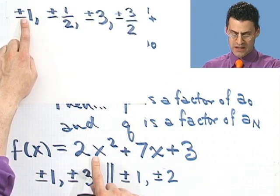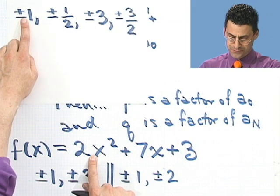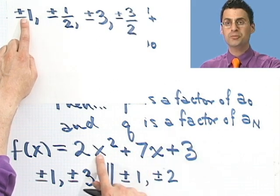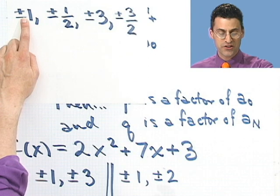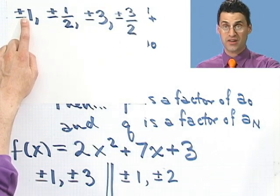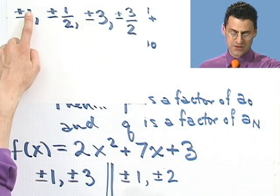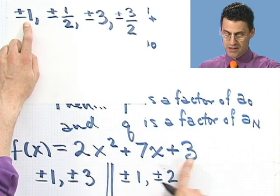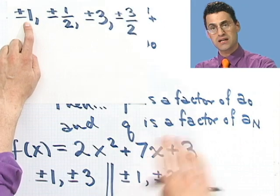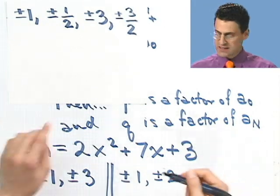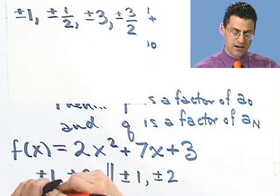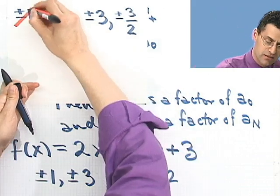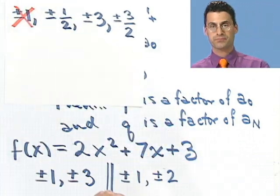Take 1 and plug it in here and see what happens. Do you get 0? If I plug in 1, I see 2 plus 7 plus 3. 2 plus 7 plus 3 is not 0, so I know that 1 is not a root, not a 0. We can ignore it. What about minus 1? Well, this would be 2 minus 7 plus 3. 2 minus 7 plus 3 is not 0. So in fact, these two values, plus or minus 1, even though they're candidates, turn out not to be roots.